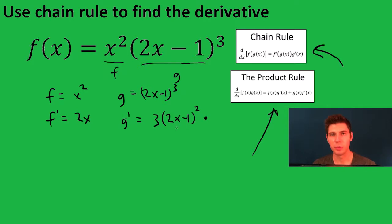And then we have to multiply by the derivative of the inside, 2x minus 1. The derivative of that is 2. And this can be simplified. The 2 can be multiplied by the 3 to give us 6, 2x minus 1 squared.